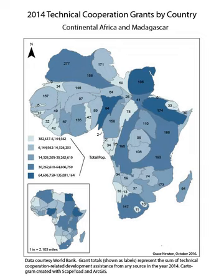Most development aid comes from the Western industrialized countries, but some poorer countries also contribute aid. Aid may be bilateral, given from one country directly to another, or it may be multilateral, given by the donor country to an international organization such as the World Bank or the United Nations agencies — UNDP, UNICEF, UNADES, etc. — which then distributes it among the developing countries.